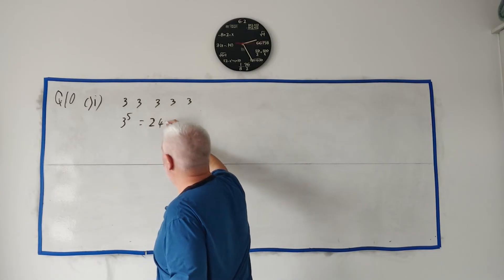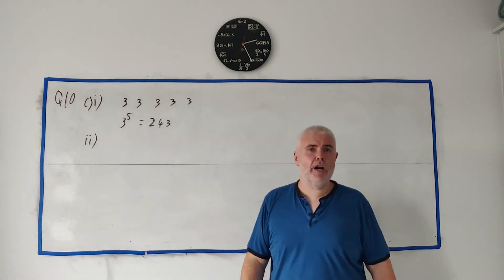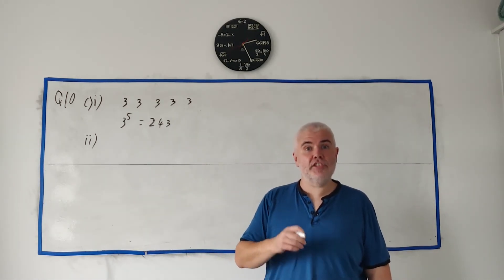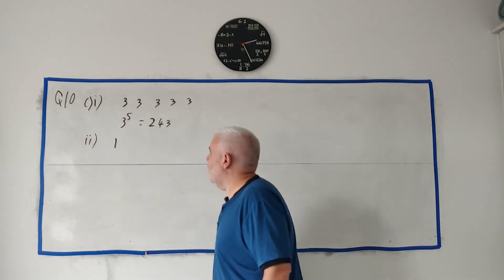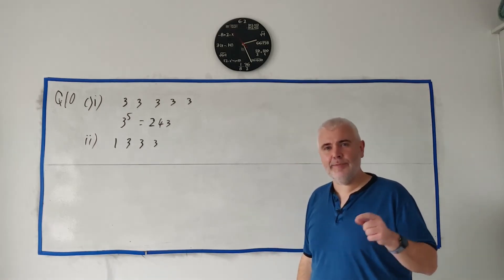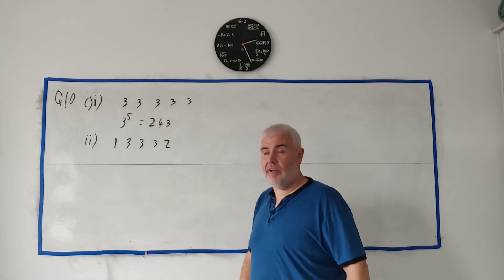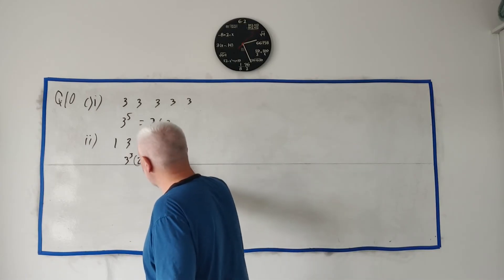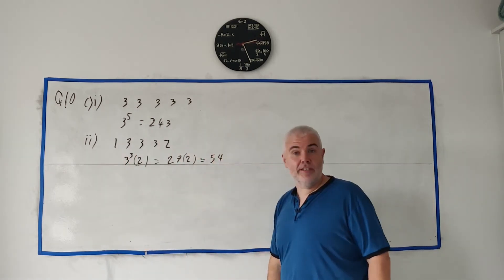Part C2: how many patterns if the first light is red and the fifth is not red? The first light must be red — 1 choice. Lights 2, 3, and 4 each have 3 options freely. The fifth must be orange or green — 2 options. Total: 1 × 3 × 3 × 3 × 2 = 54.